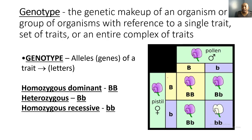Here we have a Punnett square — a monohybrid cross Punnett square — because we're only looking at one trait. Two capital B's are dominant and show purple. A capital B and lowercase b is heterozygous dominant — that capital B hides and masks the lowercase b. We see another capital B and lowercase b combination where the capital B hides the lowercase b. And then two lowercase b's — that's the only time the recessive trait shows.